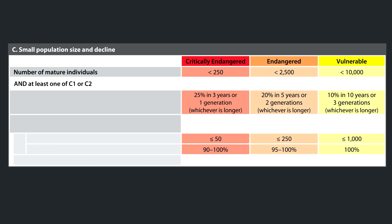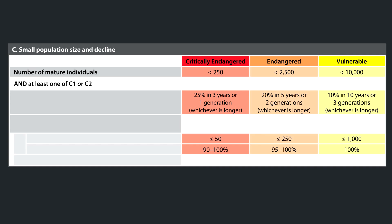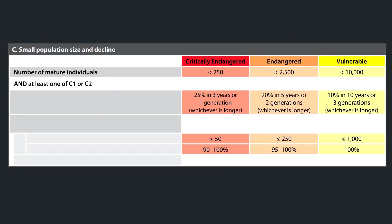Criteria C is used to identify organisms that have a small population size and are also declining. For example, if the number of mature individuals is less than 2,500, and at least one of C1 or C2 is true, then a species could be considered endangered. If the population is small and declining, that's a major risk for extinction. If it's under 250 individuals, it's critically endangered; if it's under 2,500, it's endangered; and if it's under 10,000, it's vulnerable — assuming at least one of C1 or C2 is true.